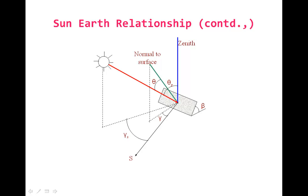For a special case, if beta is equal to theta-Z and gamma is equal to gamma-S, what happens? Let us imagine. The figure also shows one more angle, alpha, also called as altitude angle. This altitude angle can be calculated from 90 minus theta-Z, that is from the zenith angle.